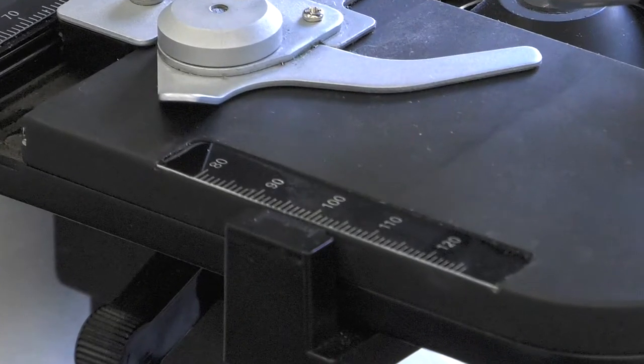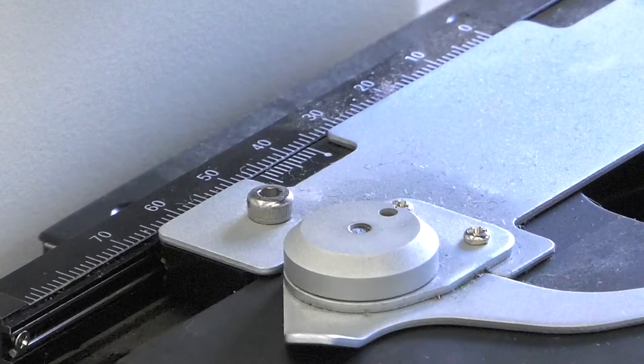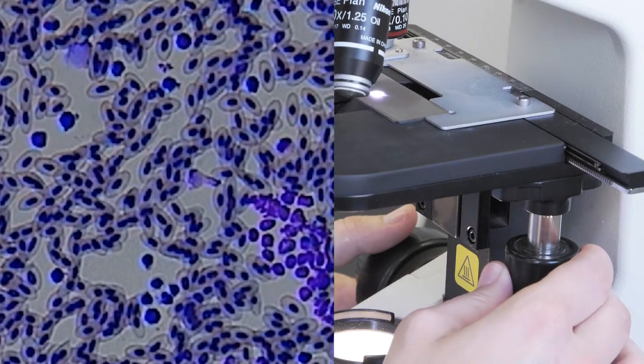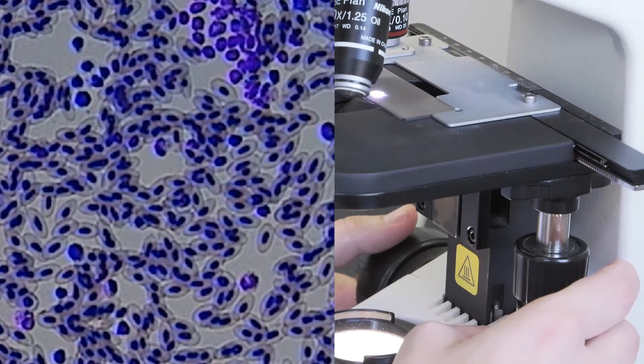The stage usually has a vernier. It is a kind of ruler to determine coordinates of interest in the sample, with a precision of about 100 microns. It makes it easy to locate the same view in later observations.